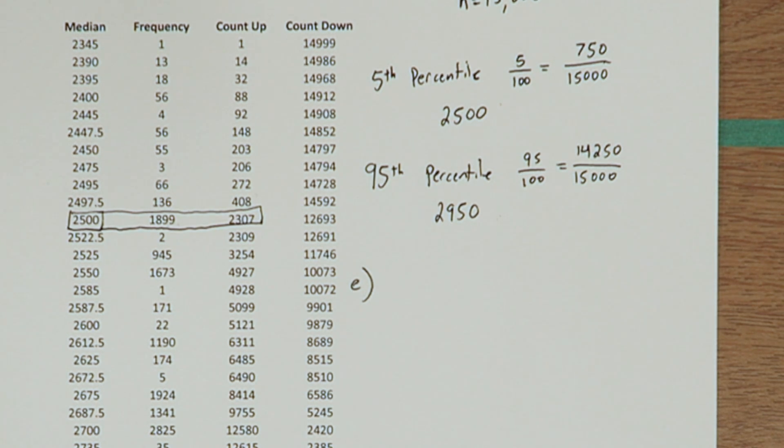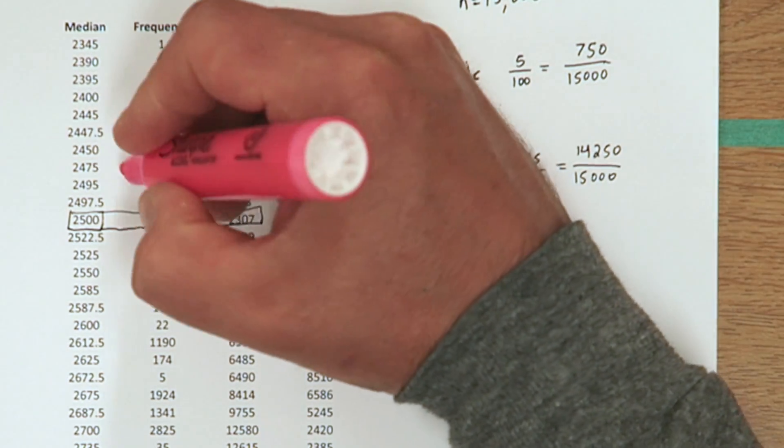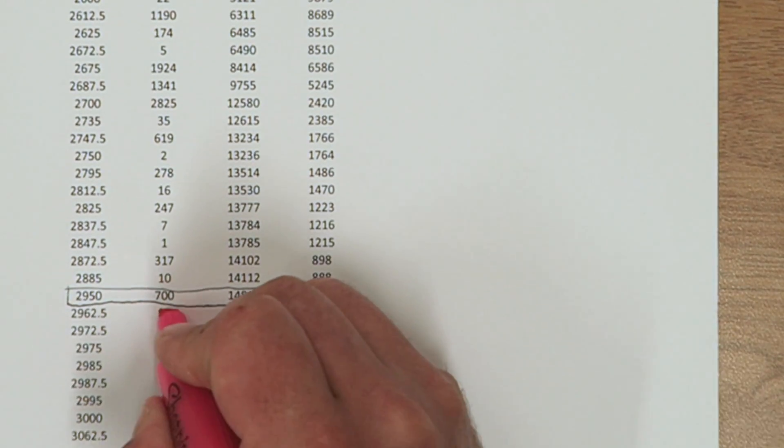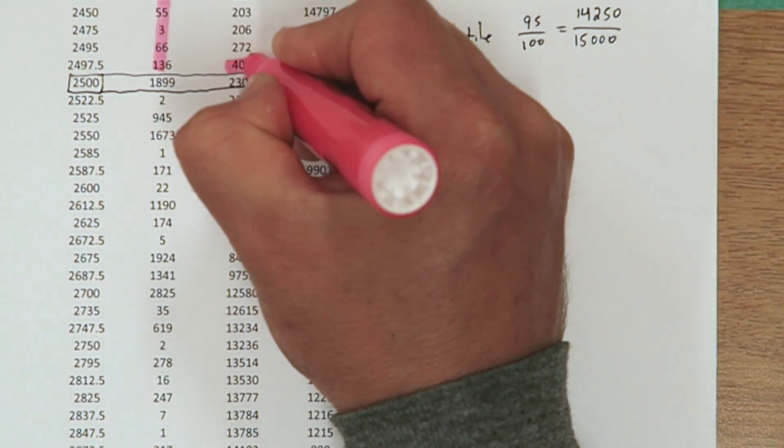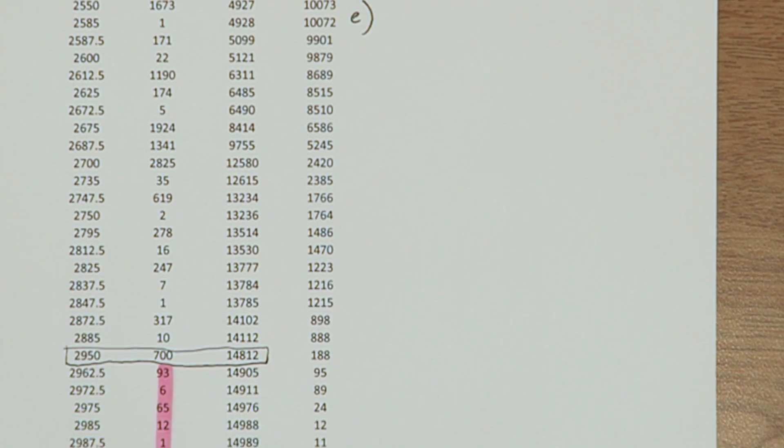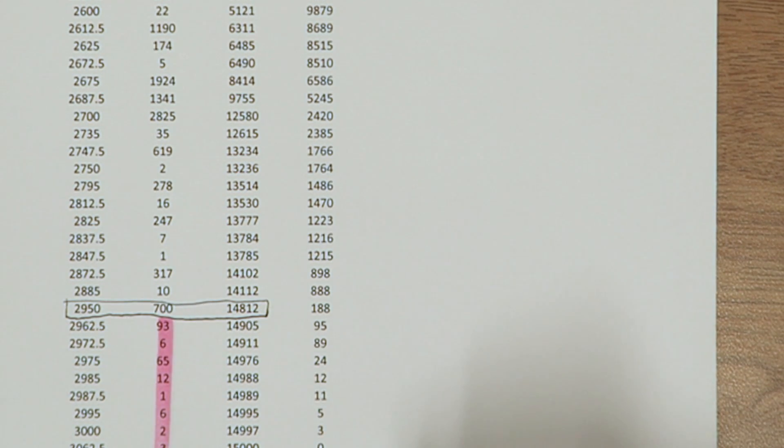To figure that out, I'm going to look at how many values are outside of that interval. So I see there's 408 sample medians that were less than 2,500. I also see that there were 95 sample medians that were greater than 2,950.